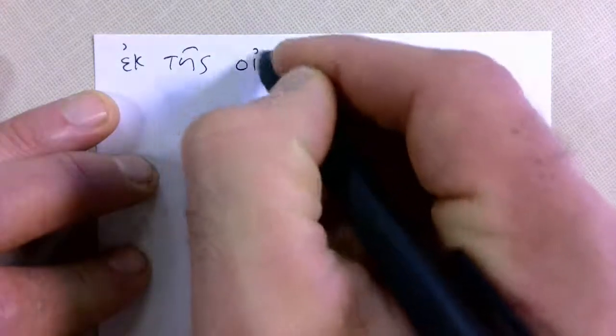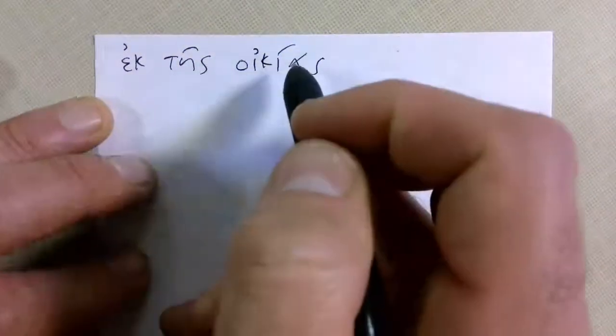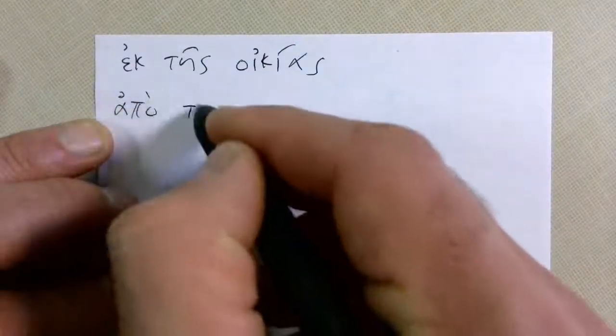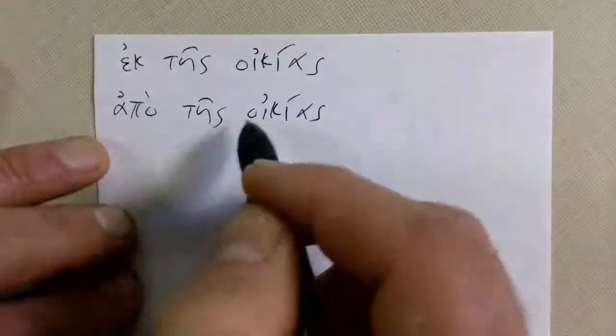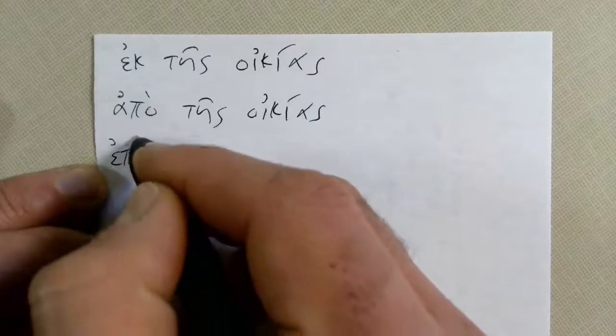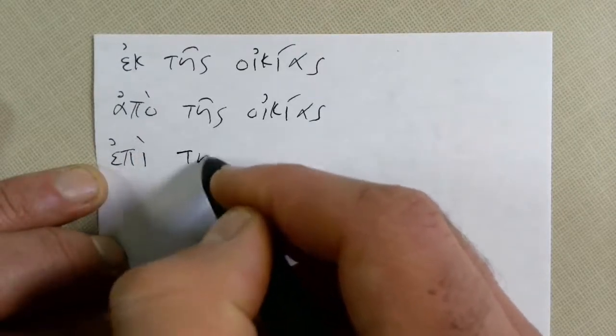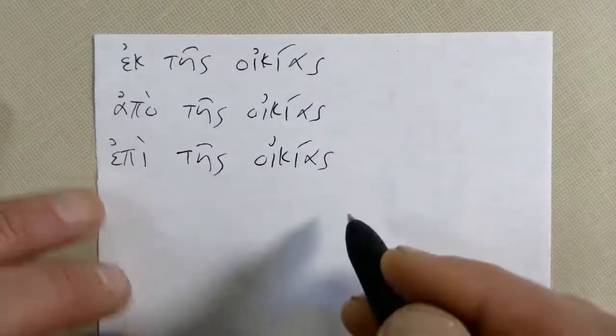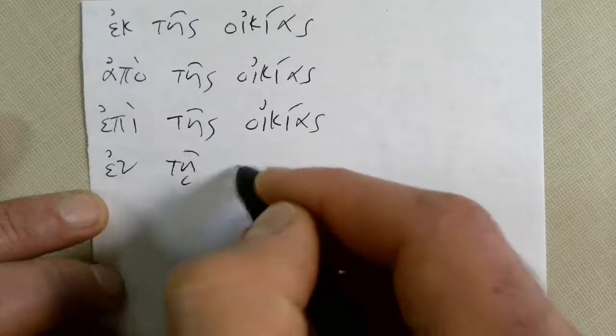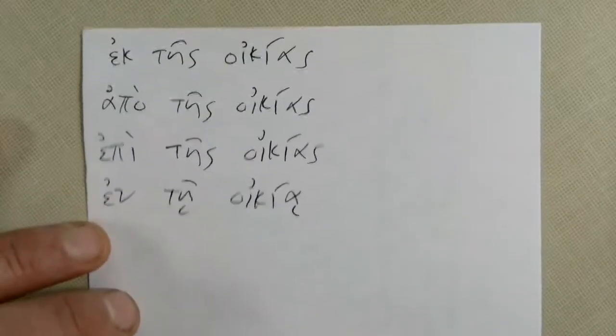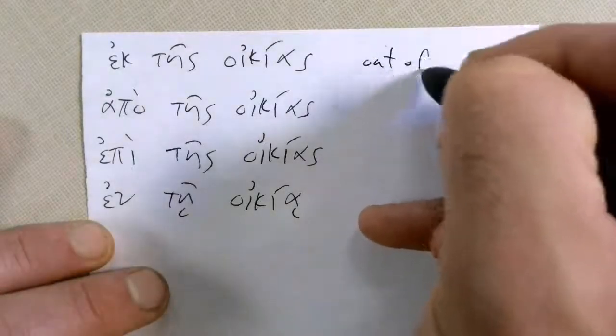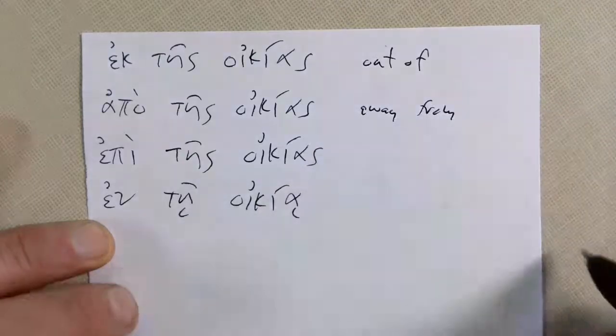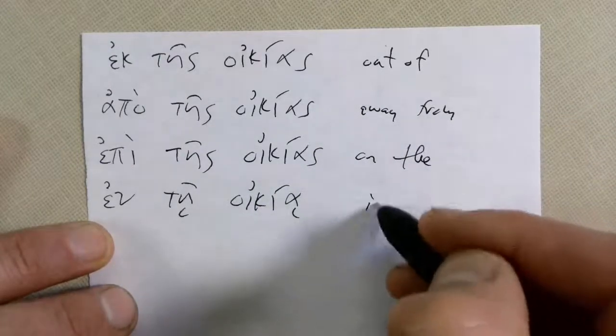Good, so let's do a quick little summary of all those out ofs, away froms, and inwards we know and on. We have ectis iquias, out of the house. We have apotis iquias, away from the house. We have, well, there's some kid on this roof. Epitis iquias, on the house. And then one more. In te iquias, in the house. Look at that, we have four of them.